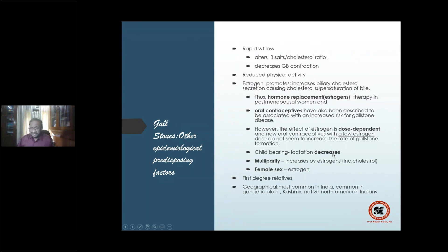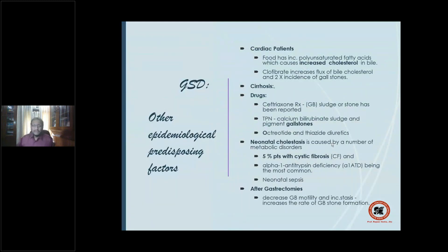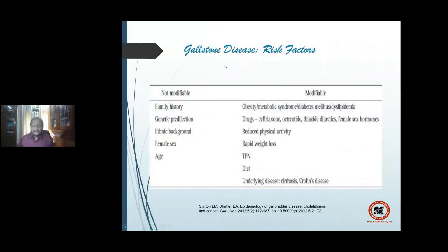Childbearing increases stone formation; lactation decreases it. Multiparity, by increasing estrogen, also increases risk. First-degree relatives show some genetic predisposition. Geographical distribution is very important — in India, the Gangetic belt from Kashmir down through UP to Bihar is thickly populated with stone formers. Globally, native North American Indians are at increased risk.